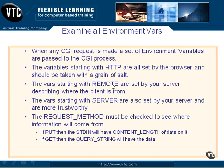The variables that start with REMOTE_ are set by your server and they describe where the client is from — that's the remote IP address, the remote server name, the remote host. The variables that start with SERVER_ are also set by your server and are therefore somewhat more trustworthy. You can make some decisions based on them and where your CGI program is located so that you can open files or do things like that.